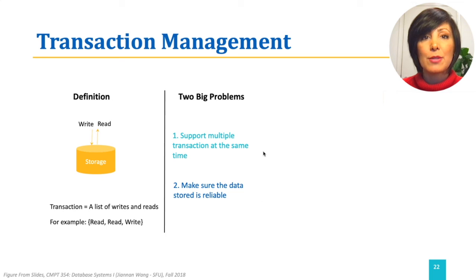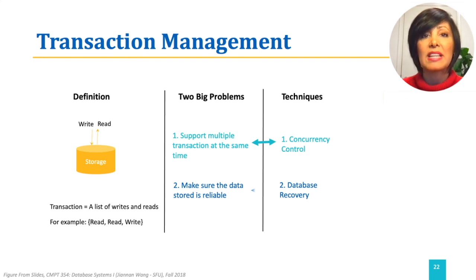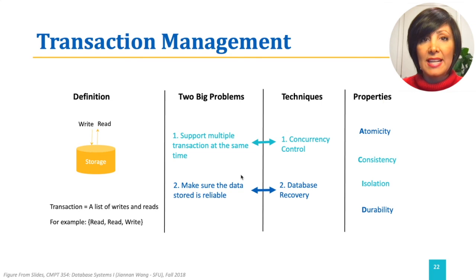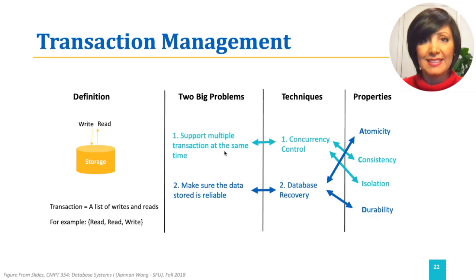In a database management system, our first problem is addressed by concurrency control mechanisms, and the second problem is addressed by database recovery solutions. Concurrency control mechanisms ensure maintaining consistency and isolation properties. Database recovery mechanisms ensure maintaining atomicity and durability.